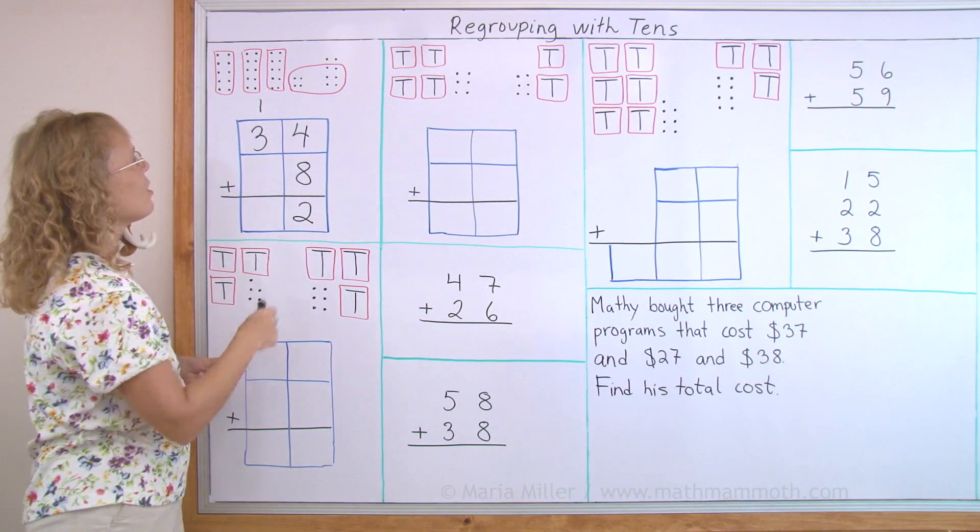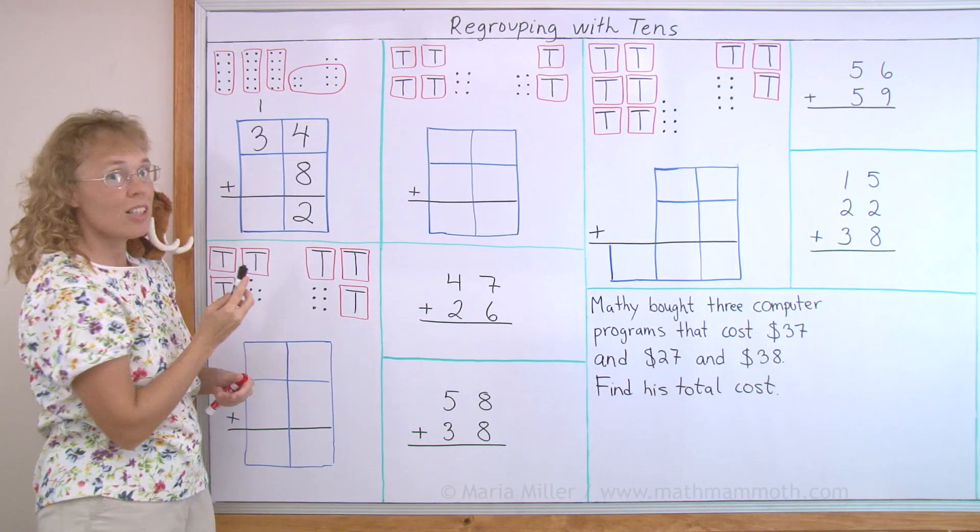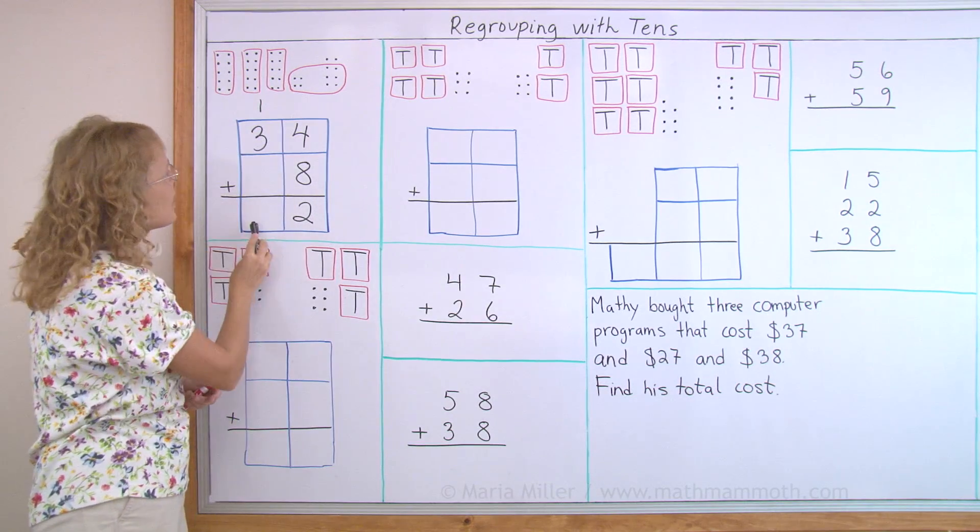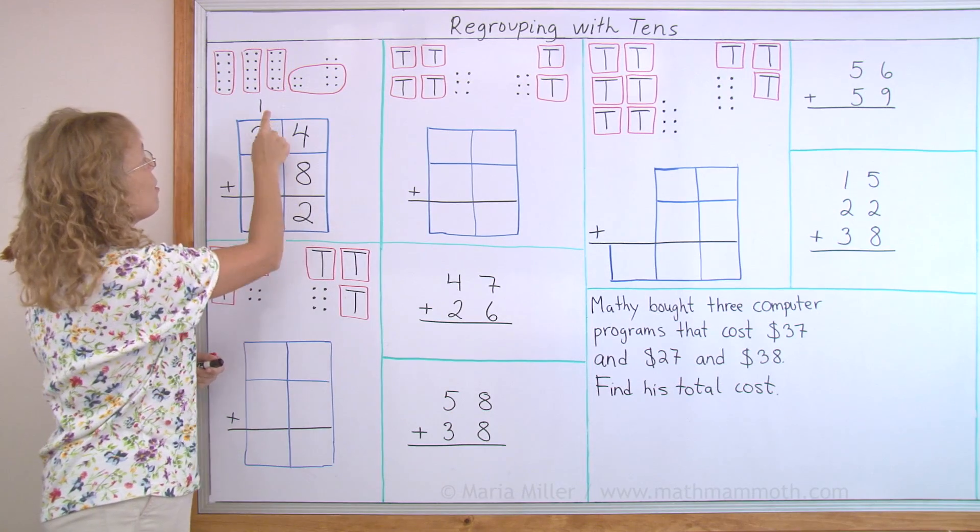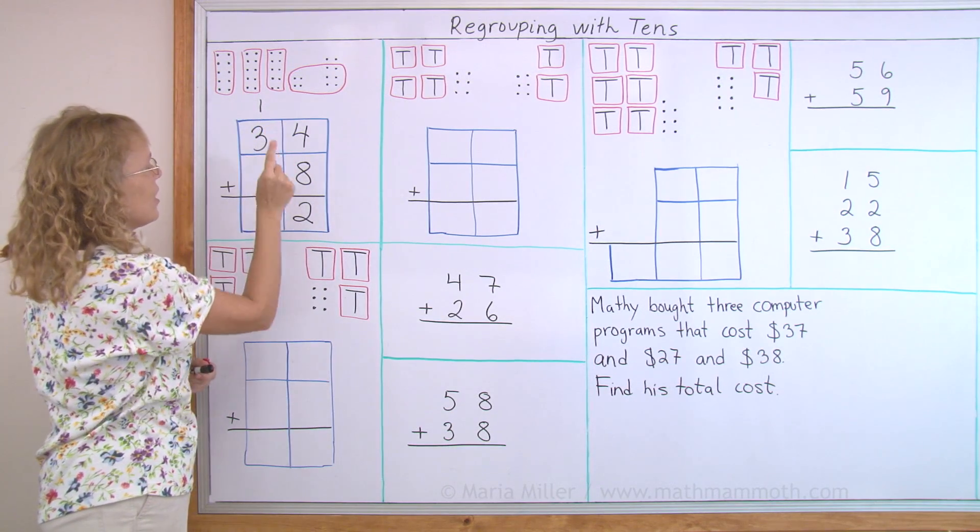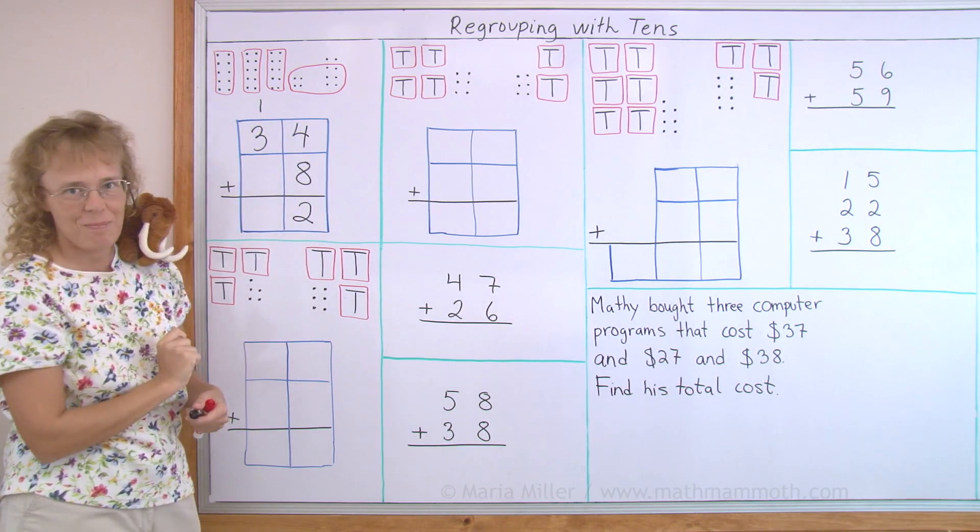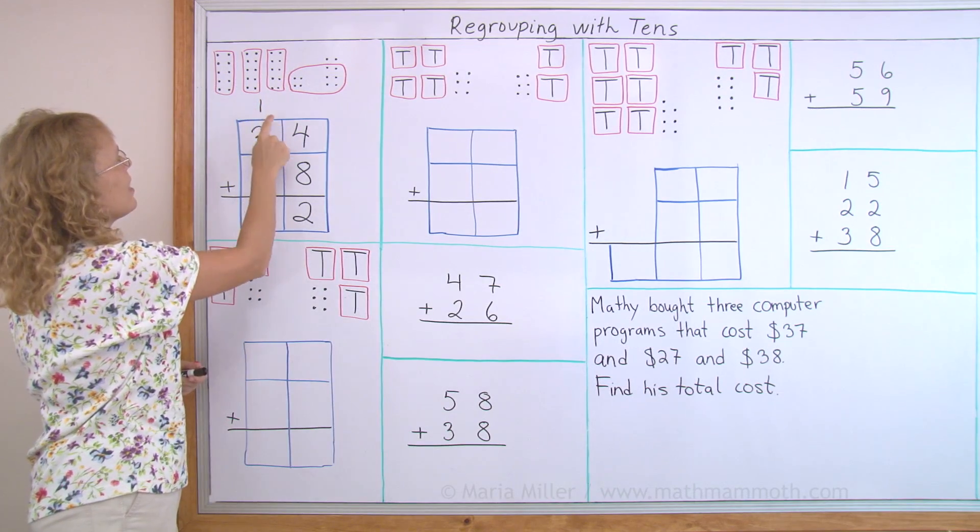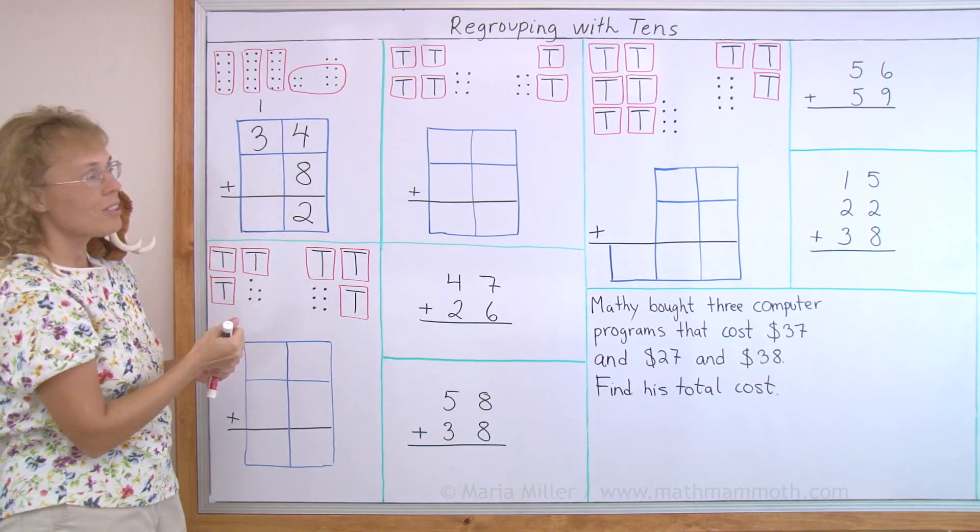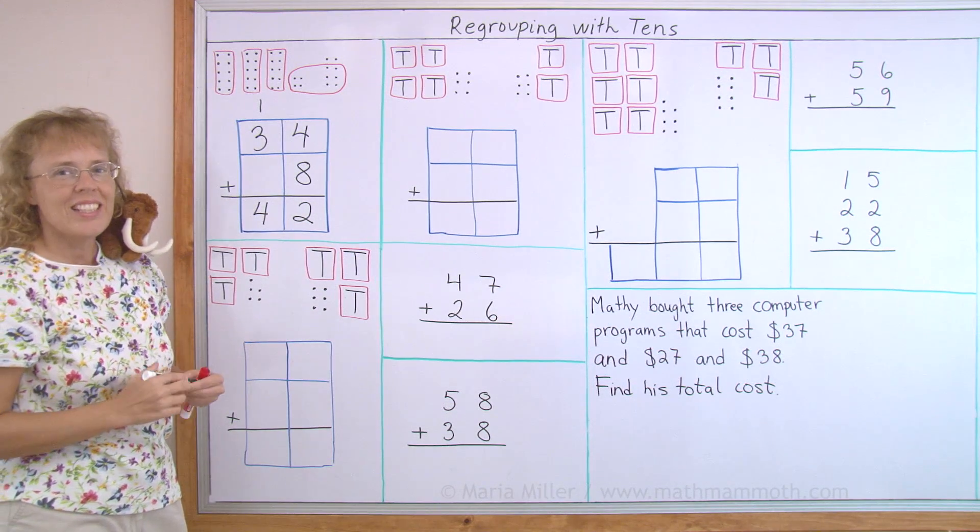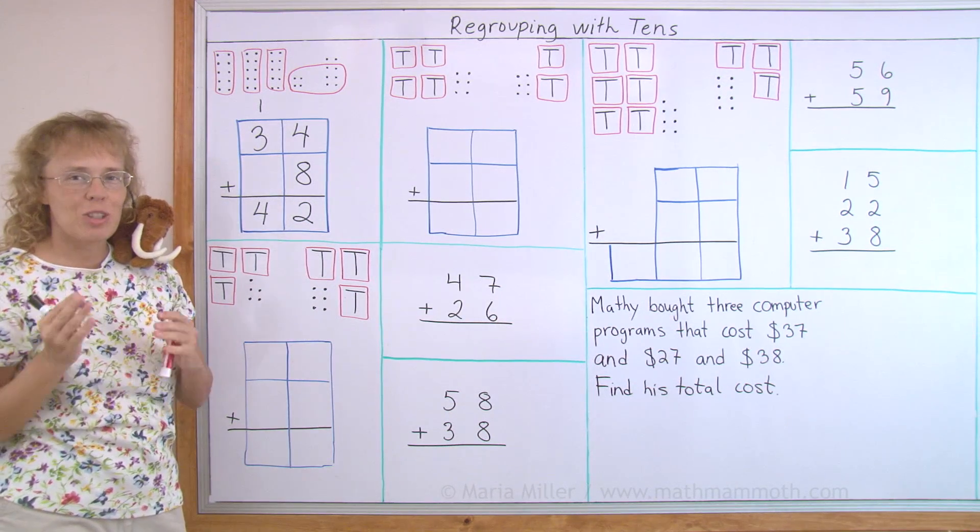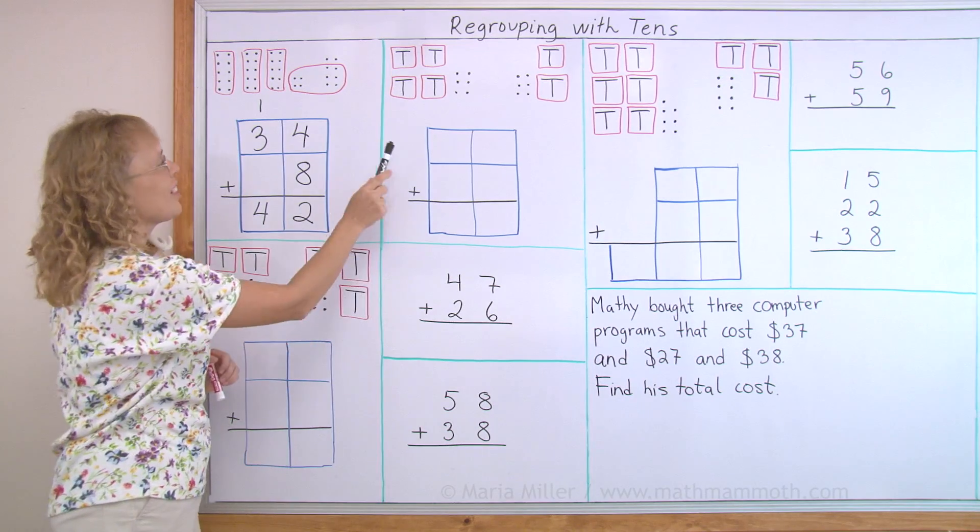And that is because this is the ones column, and this is the tens column. So my twelve, I have to regroup one ten with the other tens, and the two ones over here. And now I have one ten and three tens, and I add those. So I get four tens. Forty-two. Don't worry about it if it looked confusing because we are going to do it again and again.